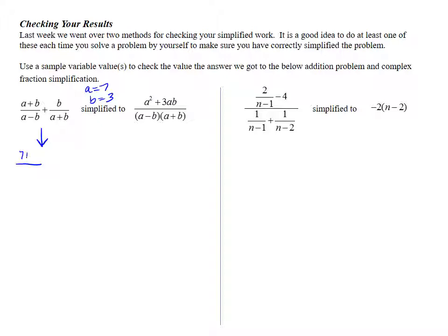So a plus b would be 7 plus 3. a minus b would be 7 minus 3. And we're adding that to the fraction b over a plus b, which would be 3 over 7 plus 3. So we end up with 10 over 4 plus 3 over 10, which simplifies by getting a common denominator. I'm going to use a common denominator of 20. So I'm going to multiply the first fraction by 5 over 5 and the second fraction by 2 over 2. So I get 50 over 20 plus 6 over 20, which is 56 over 20, which both have a 2 in them. So I'll divide out the 2 and get 28 over 10. Still a 2, so I get 14 over 5. So the original statement when I plug in 7 and 3 gives me 14 over 5.